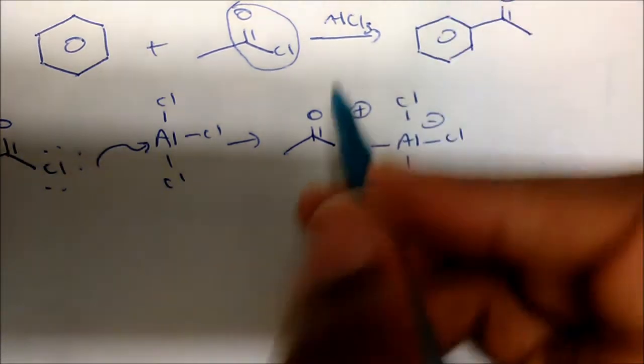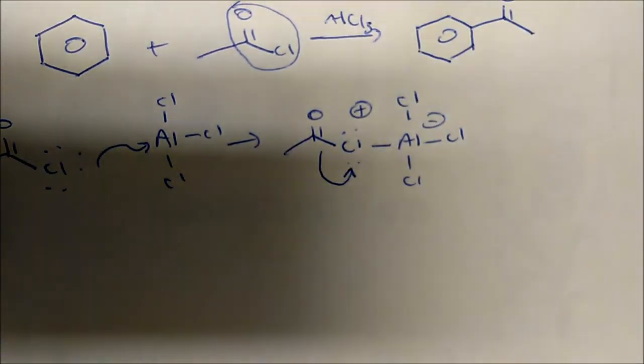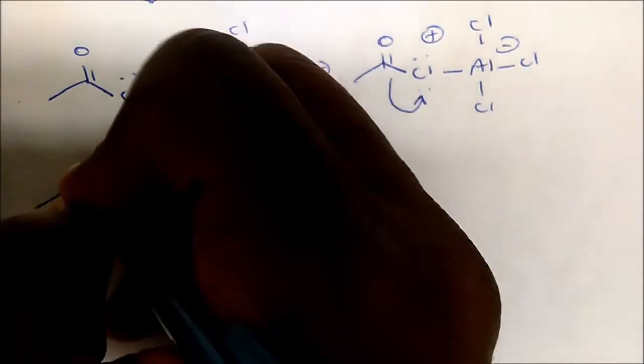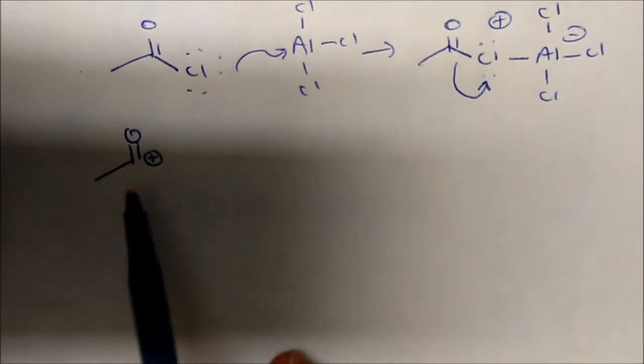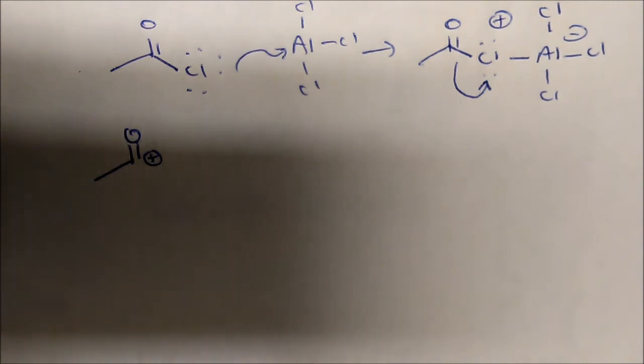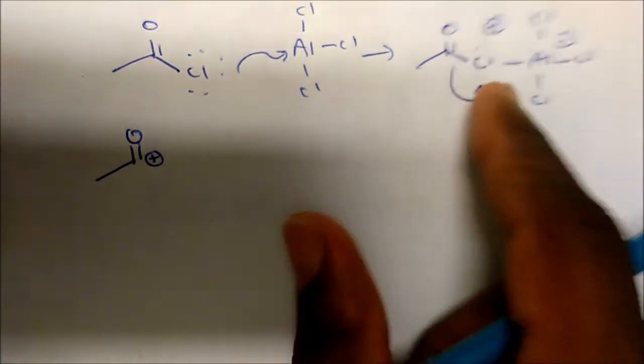This bond here is gonna break and go on the chlorine. So we form a carbocation - a plus charge on the carbonyl carbon - and we form AlCl4 minus.